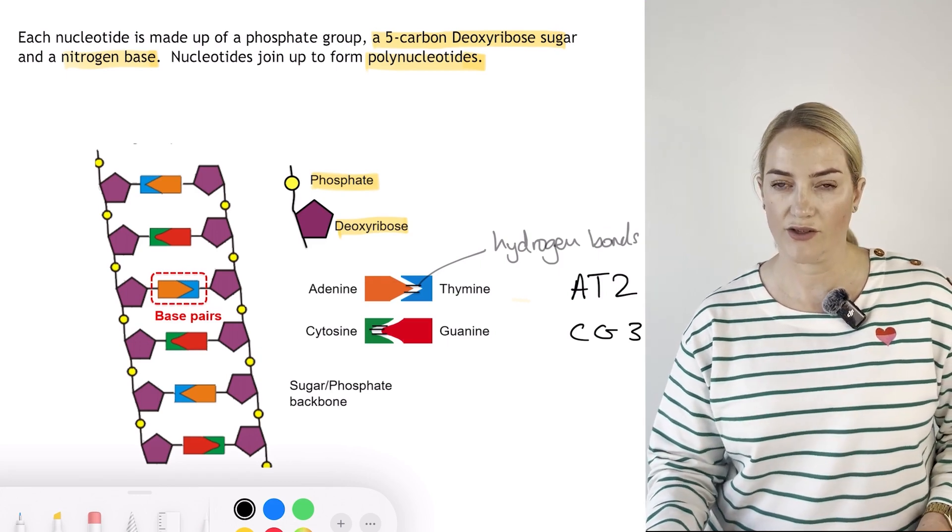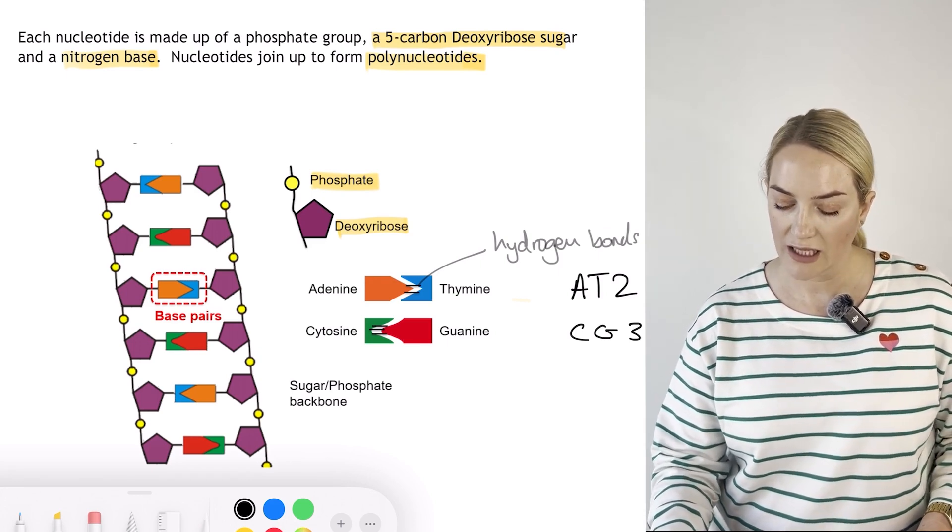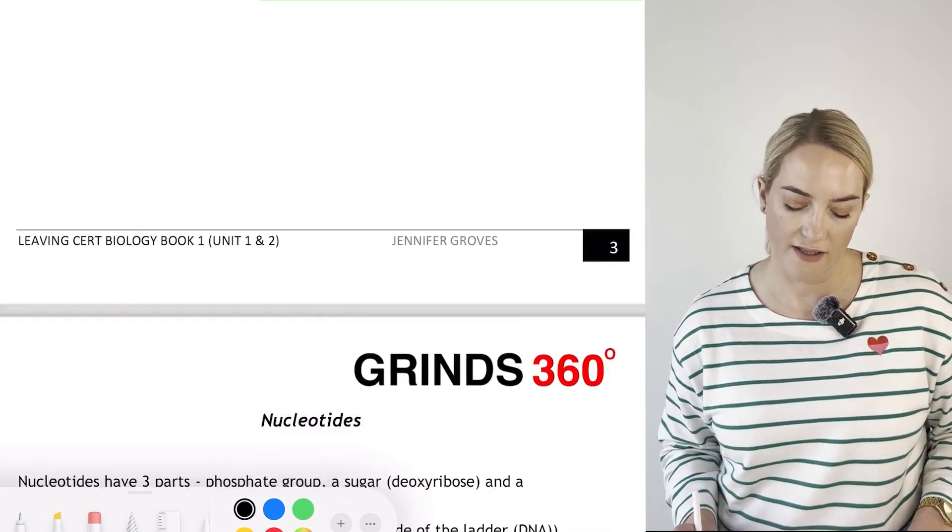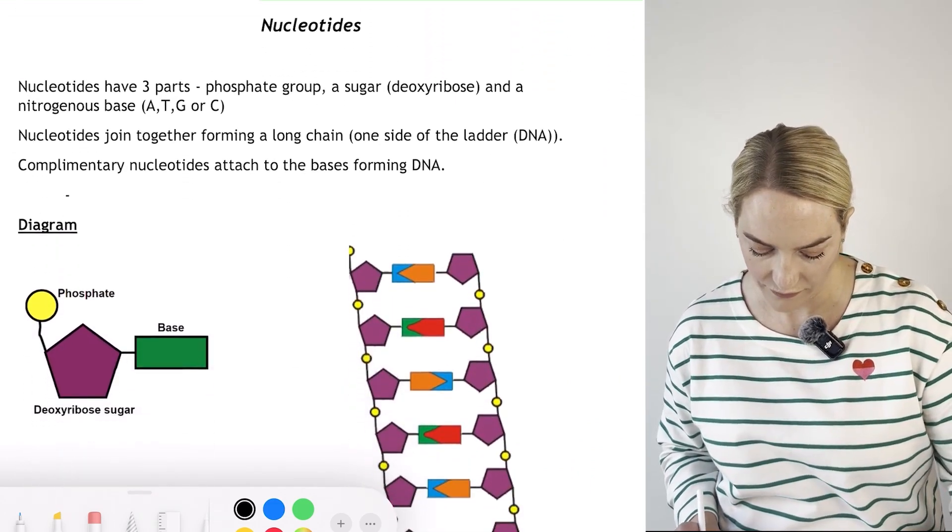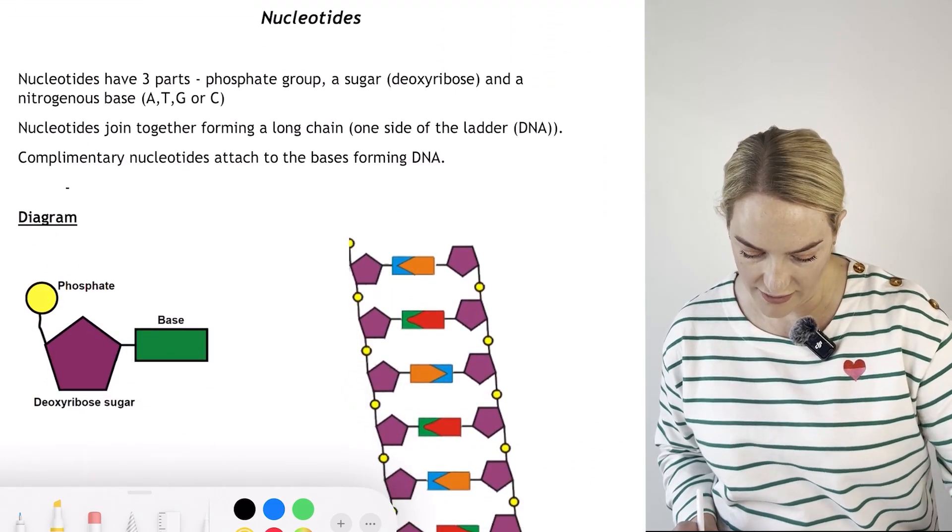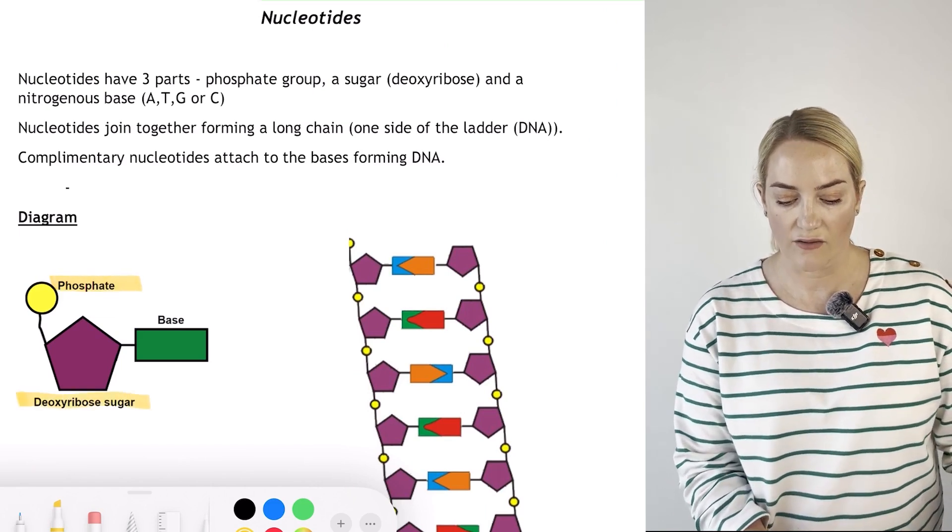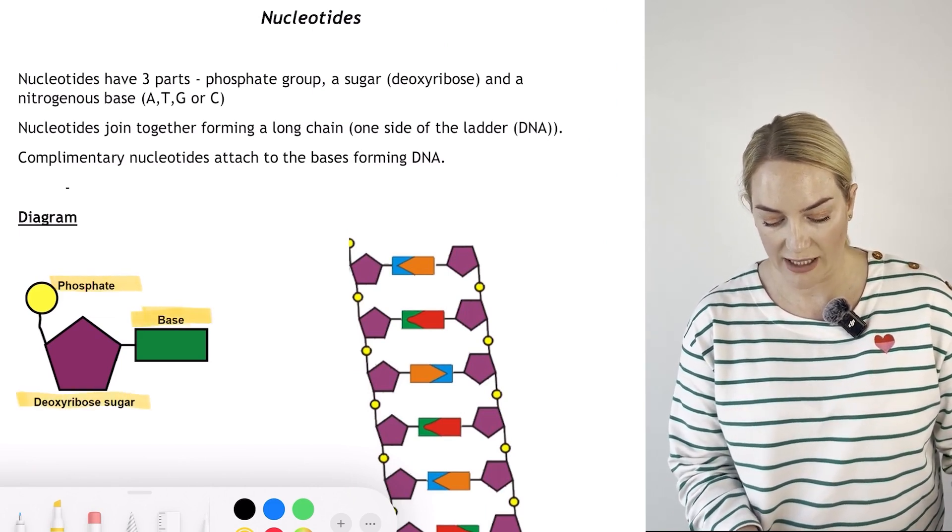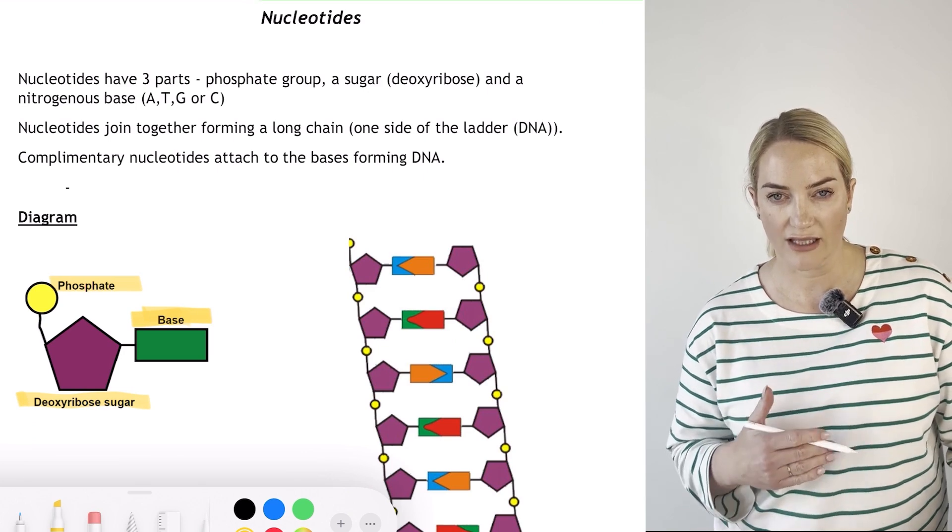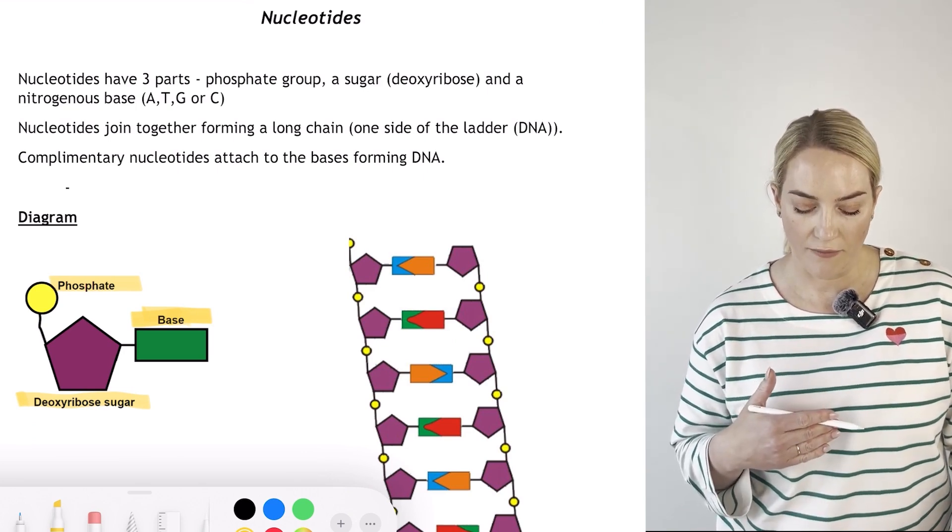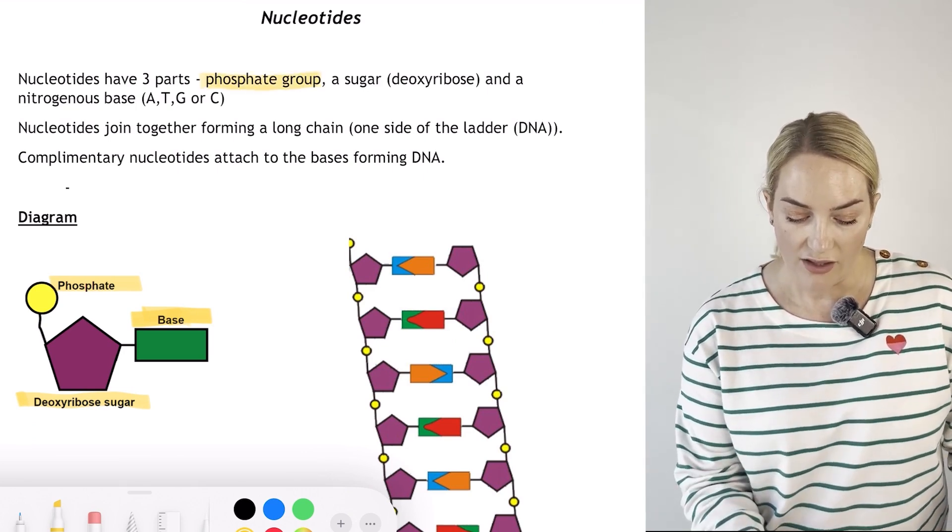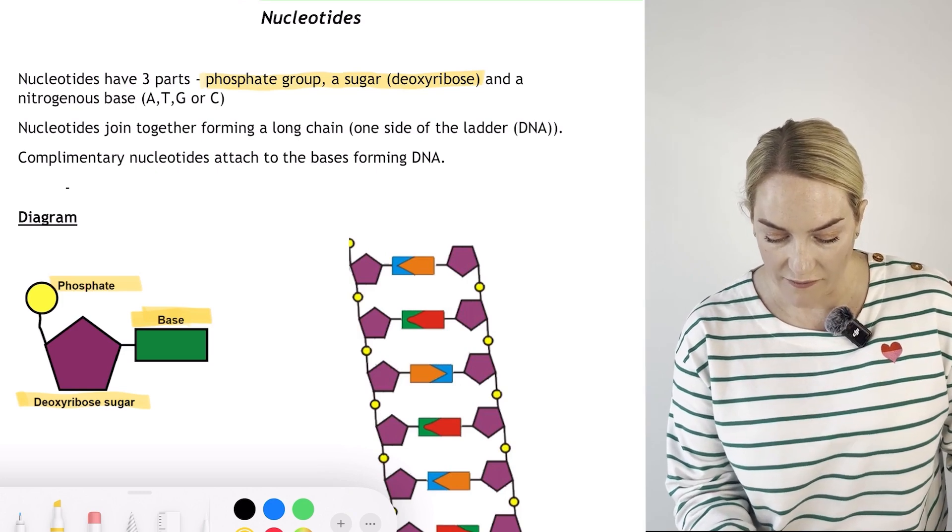AT2CG3 - there's two hydrogen bonds between adenine and thymine, three hydrogen bonds between cytosine and guanine. Nucleotides consist of a phosphate, a deoxyribose sugar, and the base. Yes, you need to know that and yes, you may be asked to draw that.